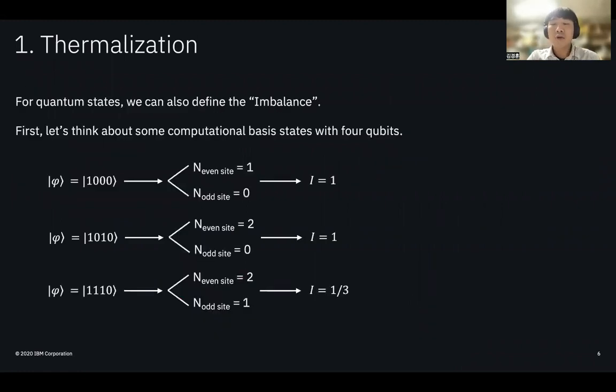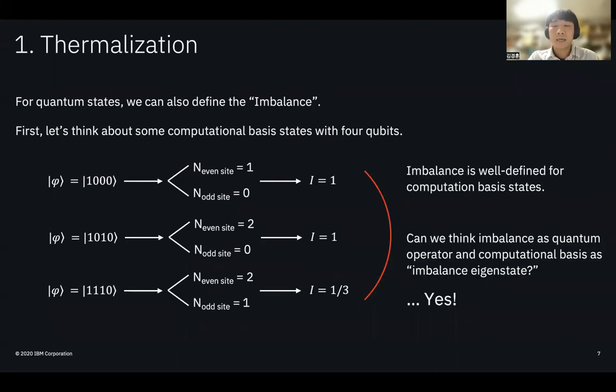But how can we measure and define the imbalance of the quantum state? For the computational basis state, we can easily define the imbalance just the same as the imbalance in the classical case. Since the imbalance is well-defined for computational basis, we can think the computational basis states are the eigenstates for the imbalance operator.